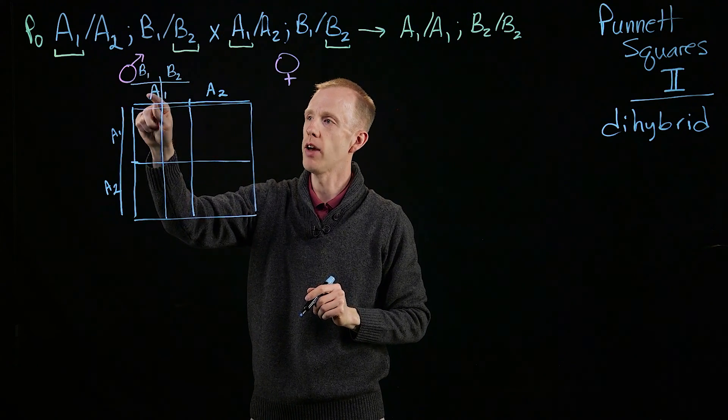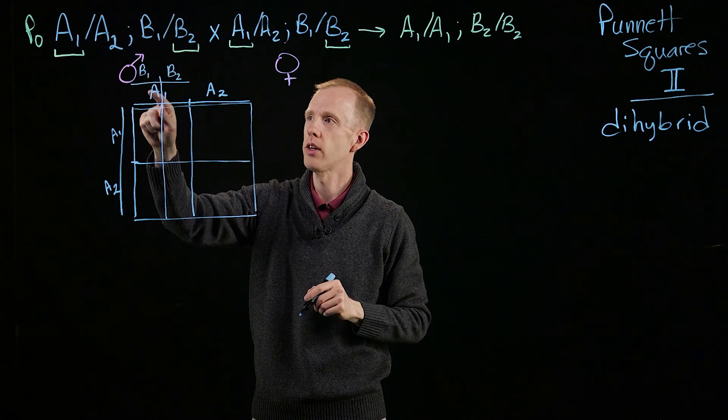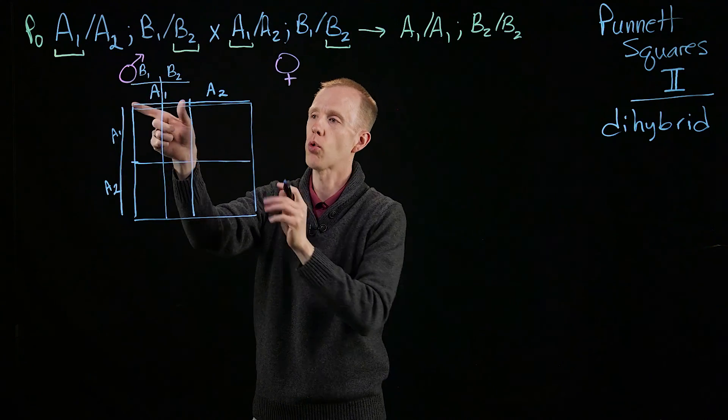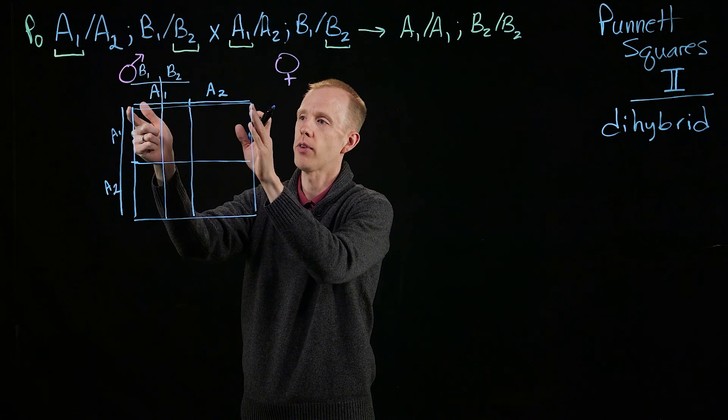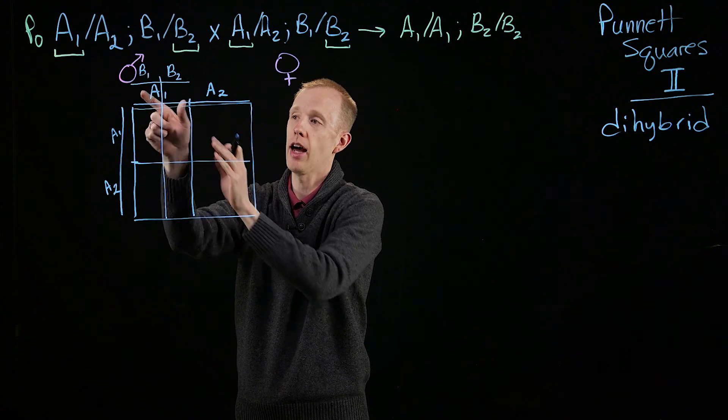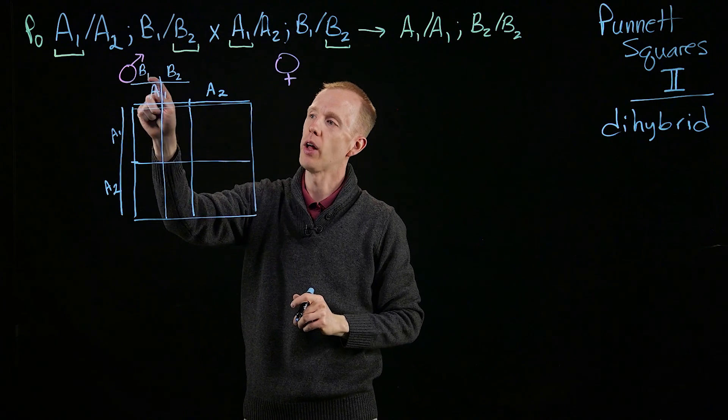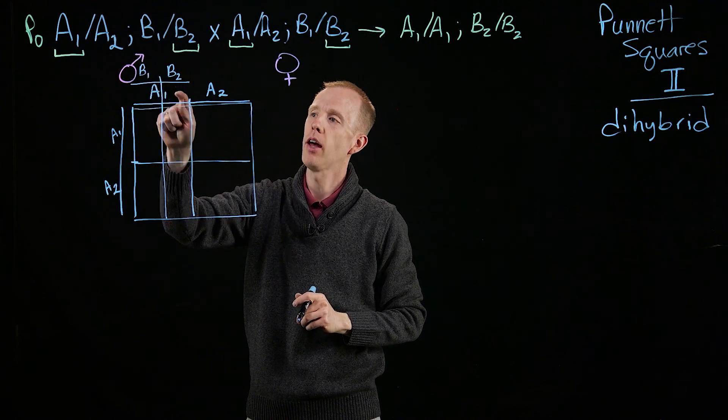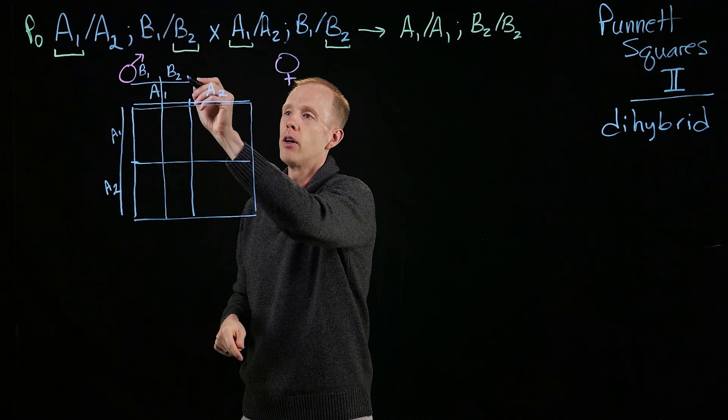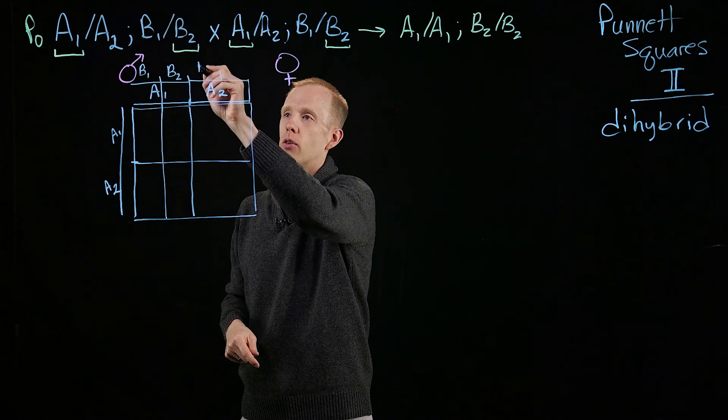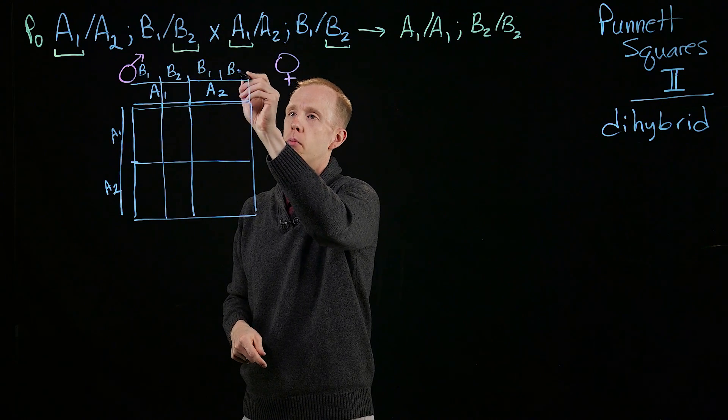So we have combinations of A1 with B1, in this case from male sperm. 25%, a quarter of the width of the entire table. Half of those gametes have allele A1. Half of that half, 25%, will have A1 with B1, and A1 with B2. And the same is true over here, B1, B2.